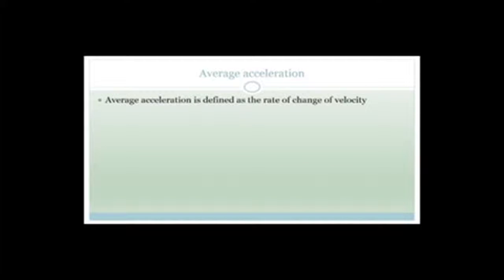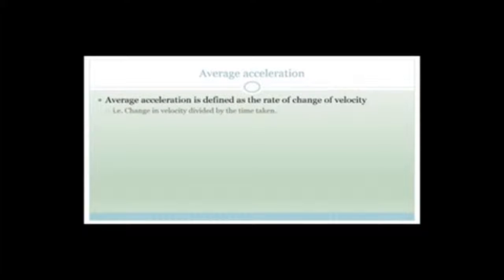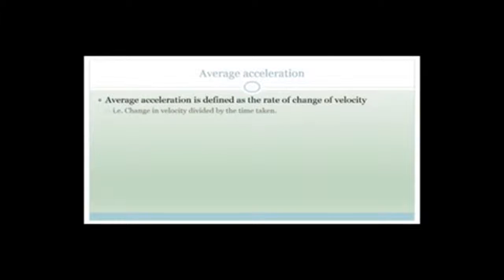Now let's talk about acceleration. Average acceleration is defined as the rate of change of velocity — the change in velocity divided by the time taken. The formula is a equals delta V over delta T. Since velocity is a vector and time is a scalar, a vector divided by a scalar is still a vector.